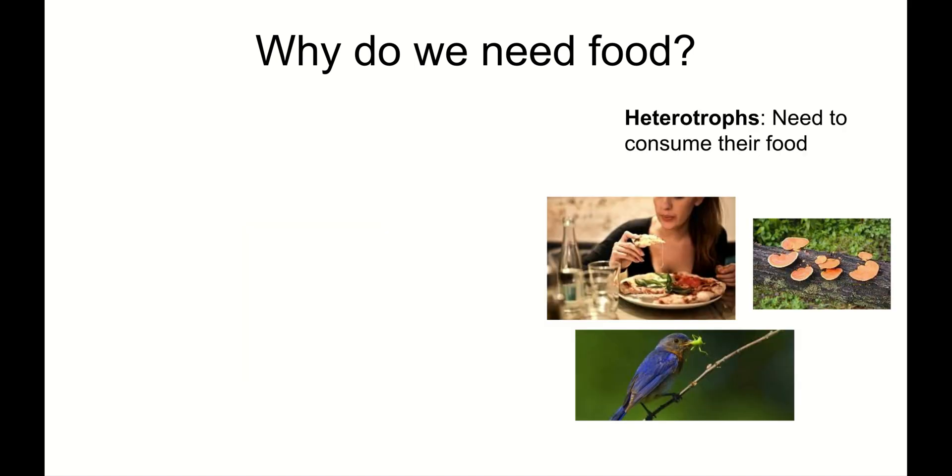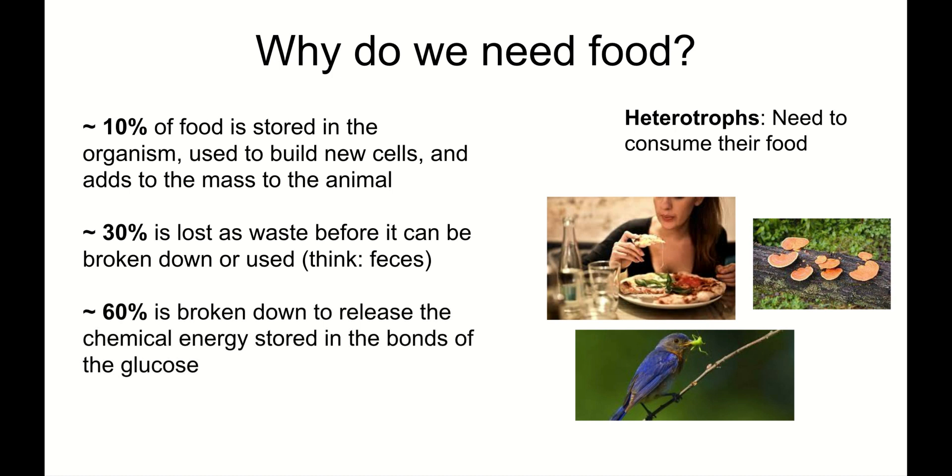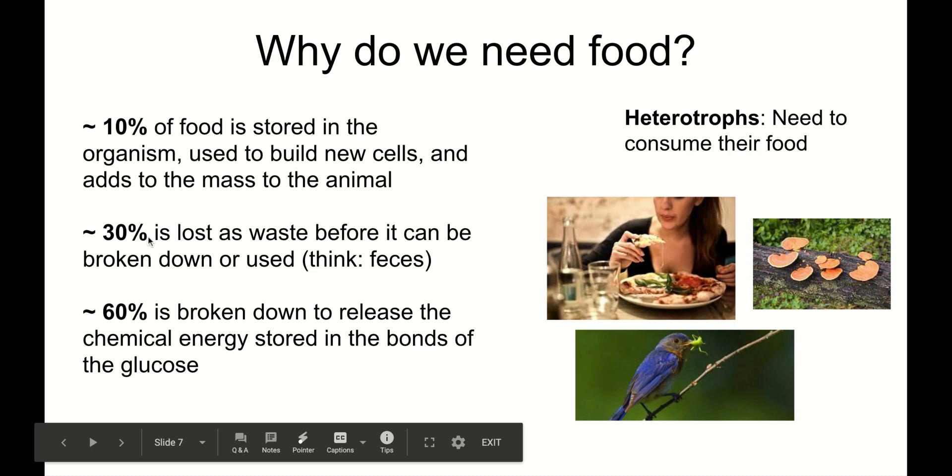What about heterotrophs? Heterotrophs have a slightly different breakdown. About 10% of the food that heterotrophs eat is stored in the organism, used to build new cells, and adds to the mass of the animal. But about 30% of the food is lost as waste before it can be broken down or used. Think feces. About 30% of the food you eat just passes right through you. But about 60% of the food that you eat is broken down to release the chemical energy stored in the bonds of the glucose.